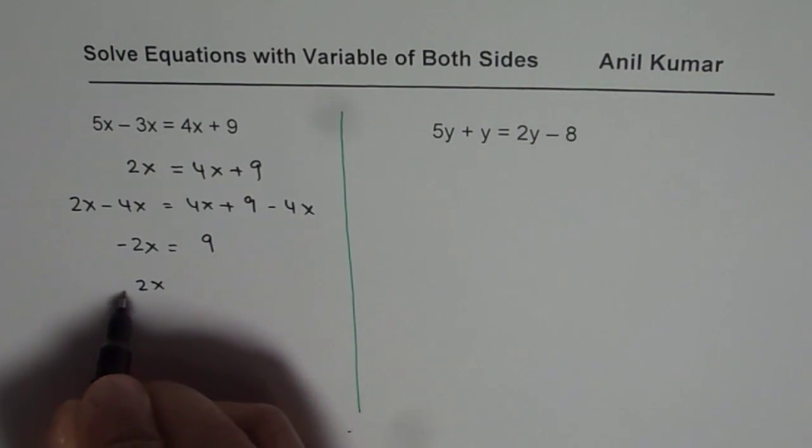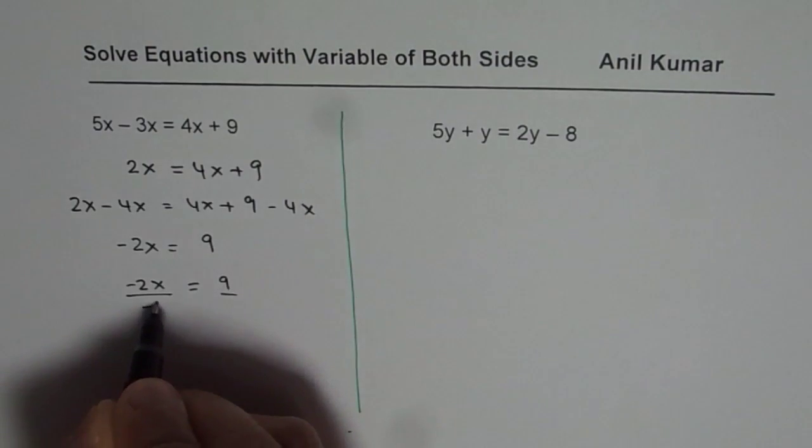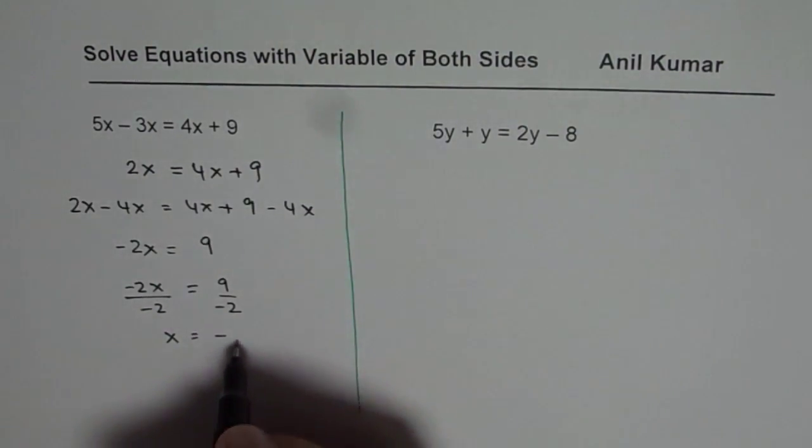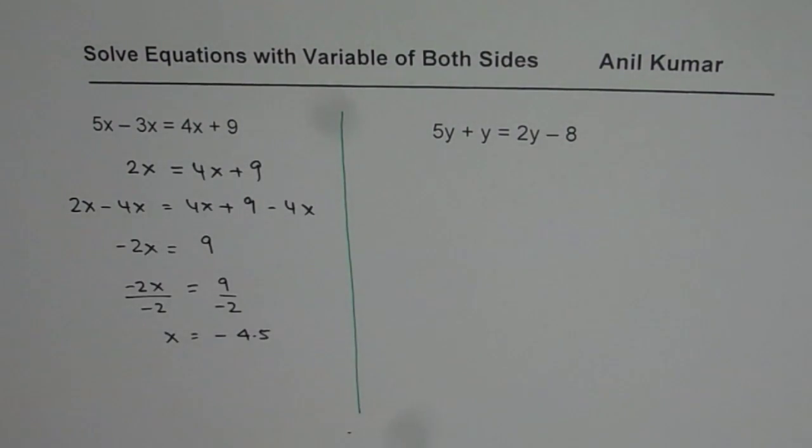Now, to solve, what should we do? We should divide both sides by minus 2. That is what we should do. So x is equal to minus 9 divided by 2, which is 4.5. So that becomes the solution for the first equation.